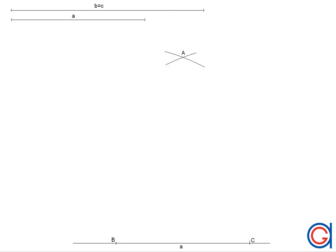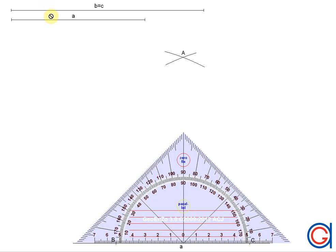Vertices are always represented with capital letters and their opposite sides with the same lowercase letter. So opposite the vertex A is side A.